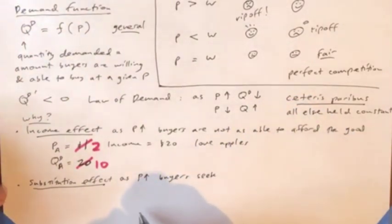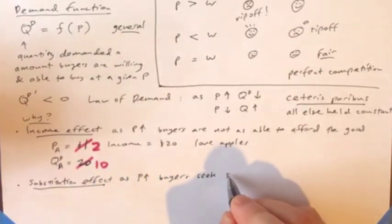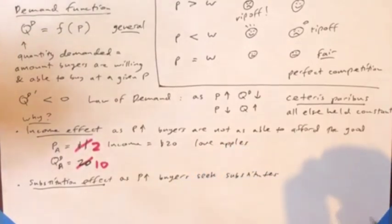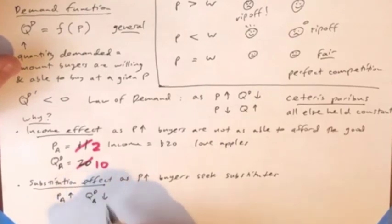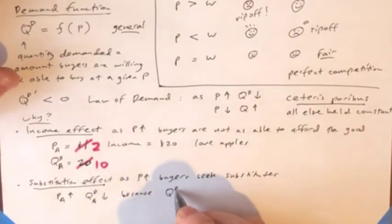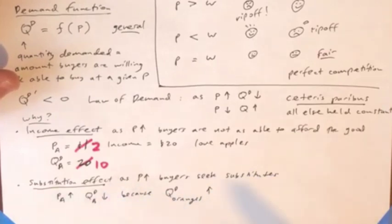The second thing is the substitution effect. Not everyone has extreme preferences where they're willing to buy it no matter what the price is. Because as the price goes up, buyers seek out substitutes. They buy other things. If the price of apples goes up, the quantity demanded of apples goes down because some other quantity is going up, like the quantity demanded of oranges. People buy the substitute instead. And vice versa. Income effect, substitution effect, Marshall's justification for the law of demand.